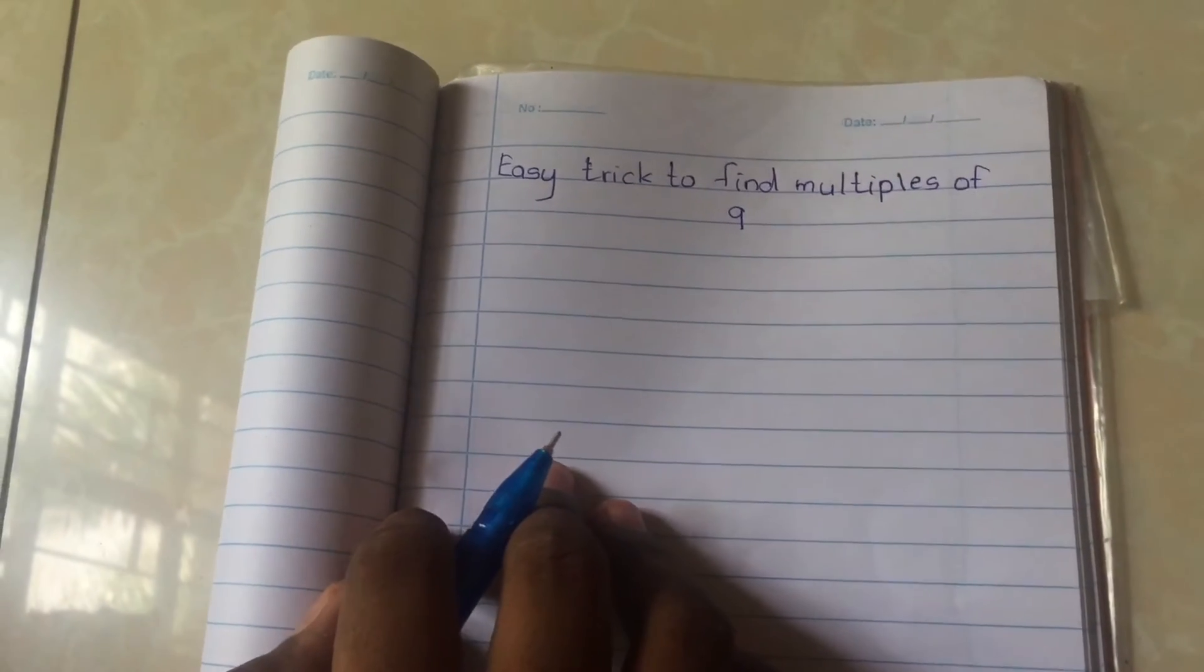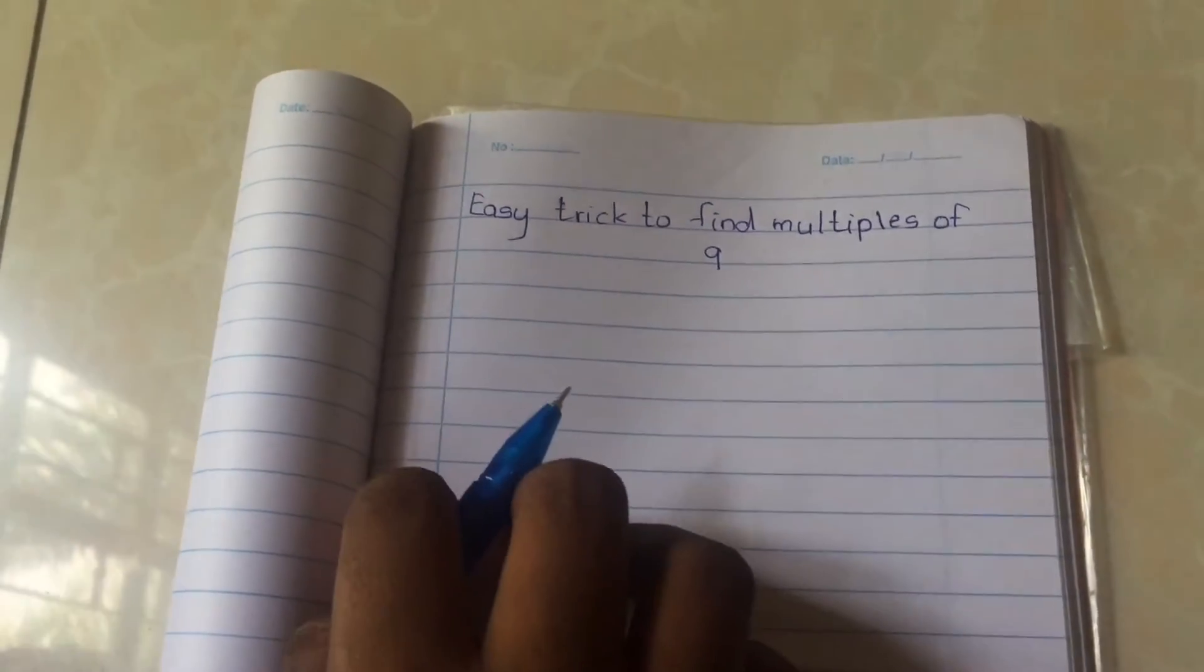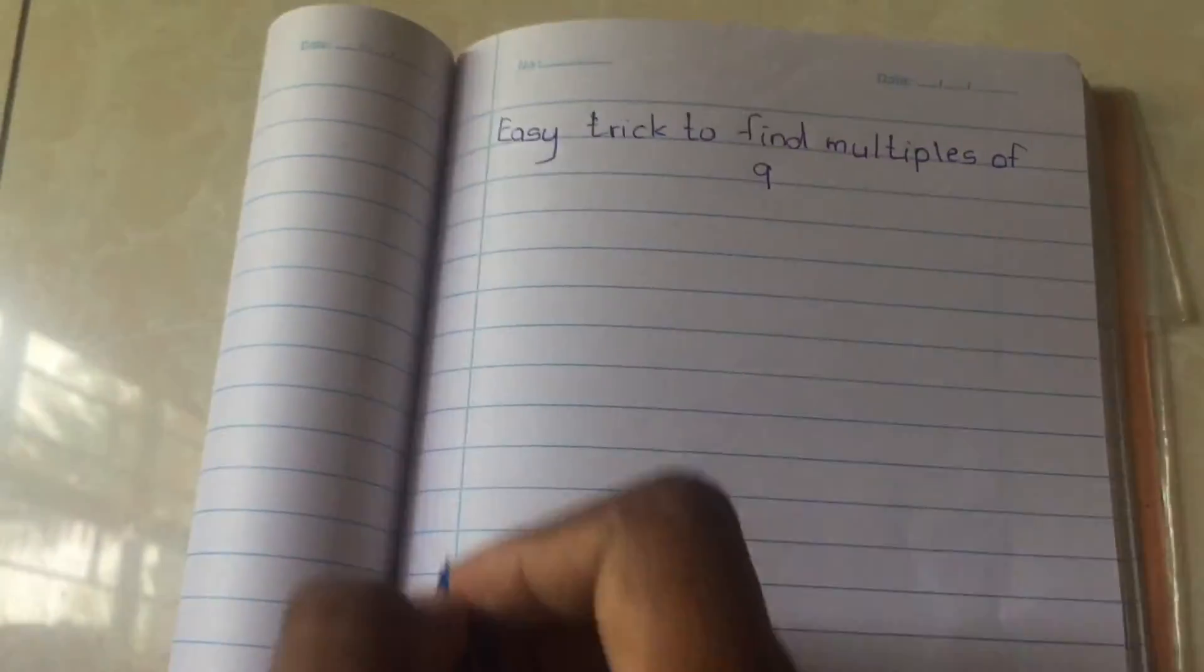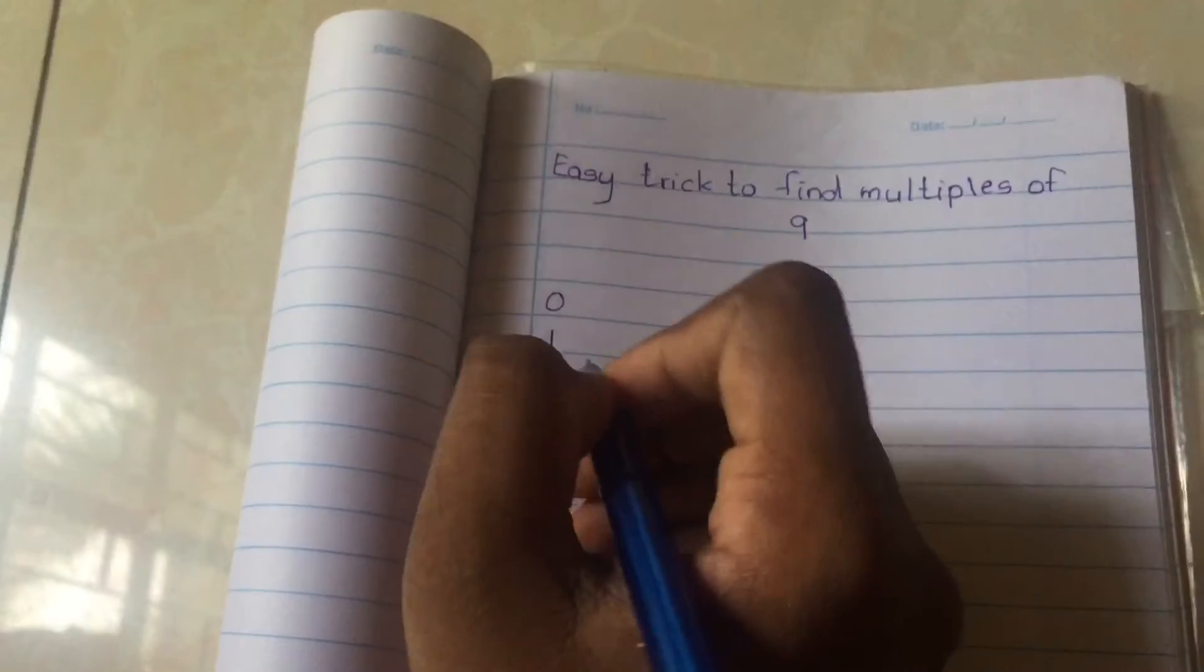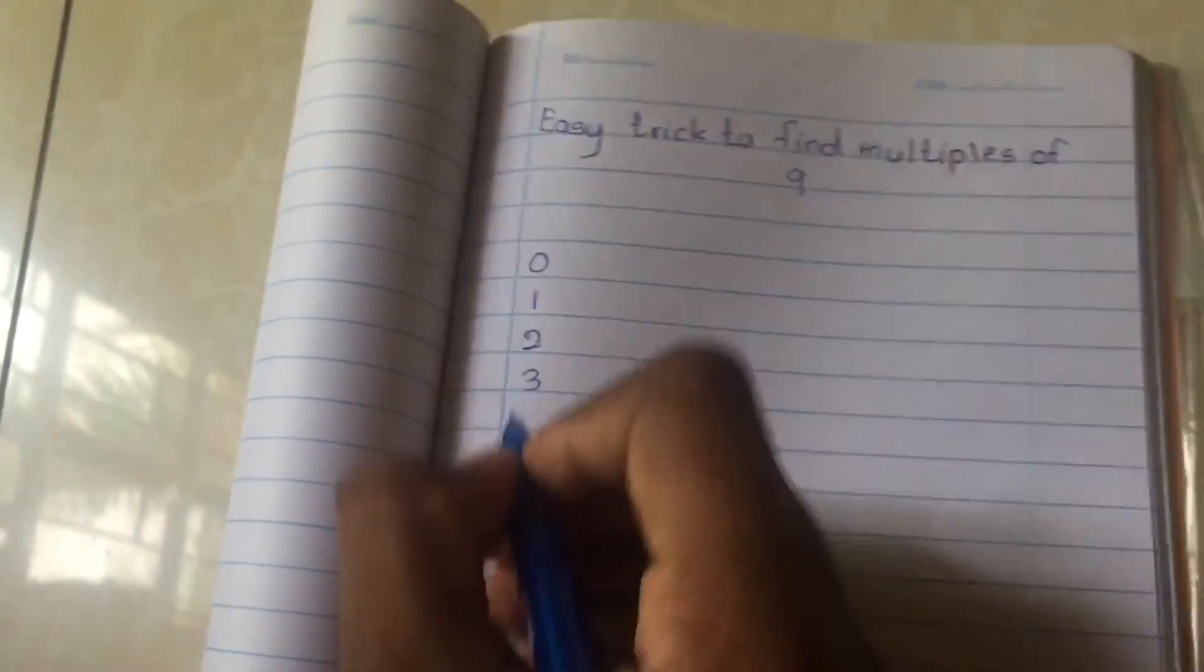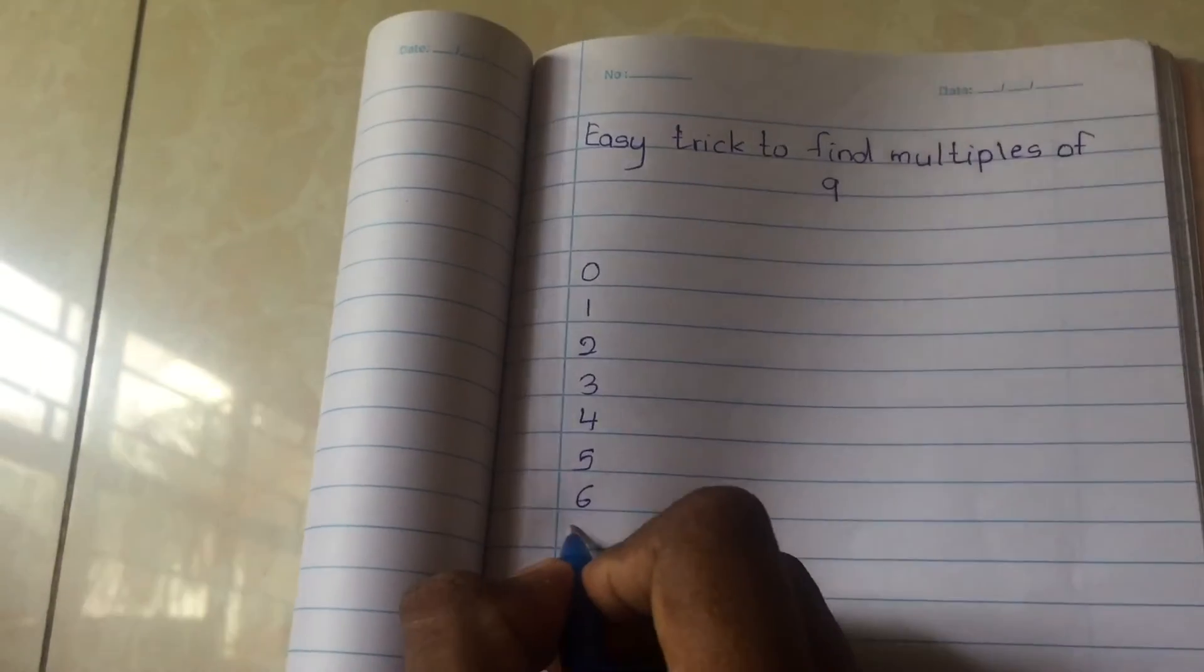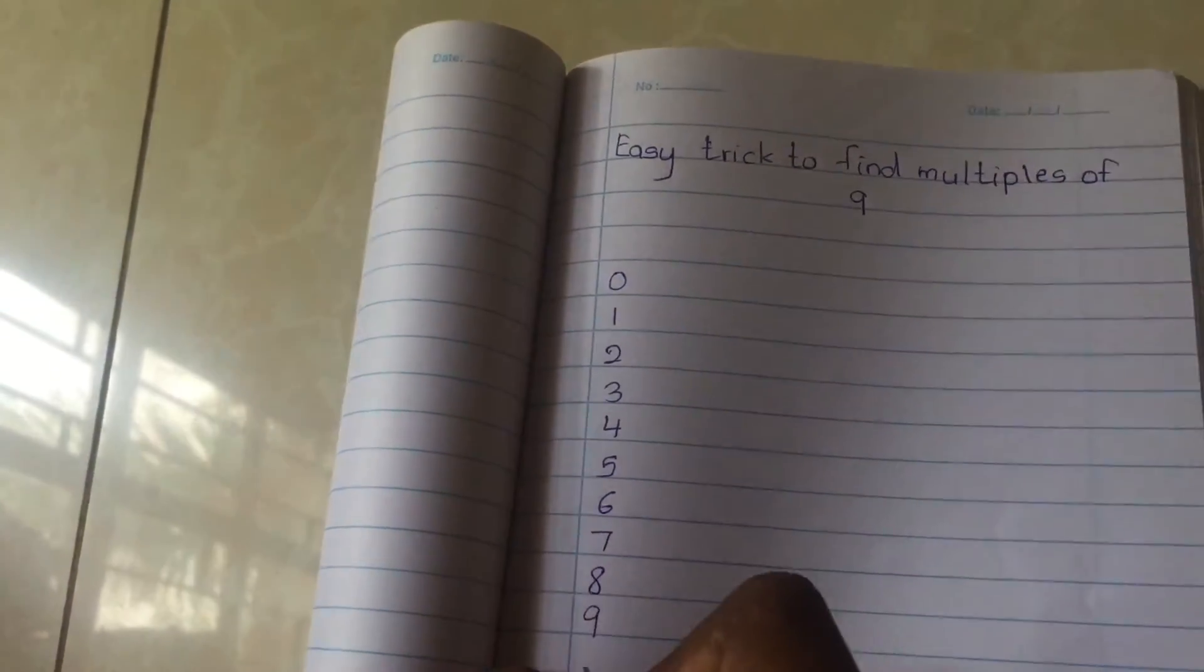Hi guys, this is an easy method to do. Let's do it. To do the method, we should write 0 to 9 from upwards to downwards. Let's write 0, 1, 2, 3, 4, 5, 6, 7, 8, 9.